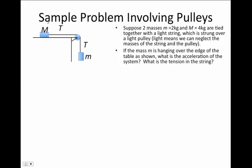In this problem, we have two masses, capital M and little m, and they are connected to each other by a light string. The string runs over a pulley and down to the mass little m. Capital M sits on a frictionless table. Little m hangs off the side of the table.